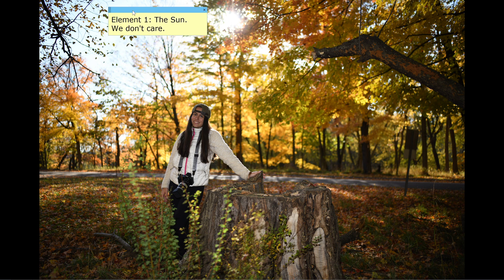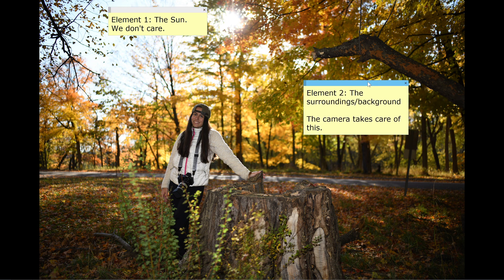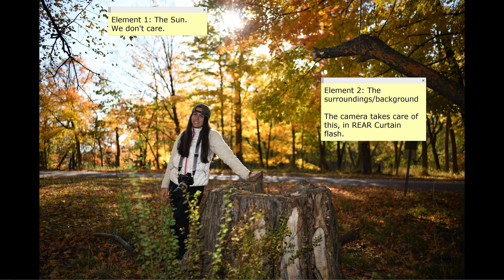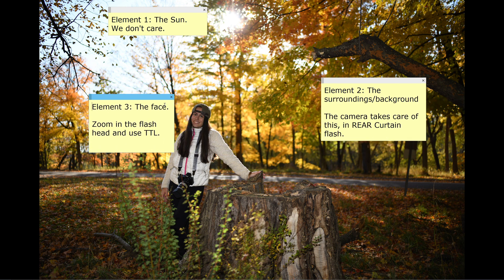In an image like that we have three elements. Element number one is the Sun — we don't care about it because it's already white. Element number two is the surroundings and background — the camera will take care of this with rear curtain flash. Rear curtain means the camera first exposes for the background and when it's done, it fires the speedlight. Element number three is the face — to avoid wasting speedlight, zoom in the flash head and use TTL.